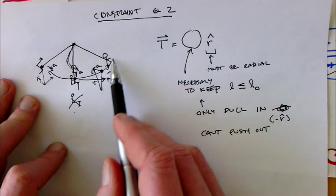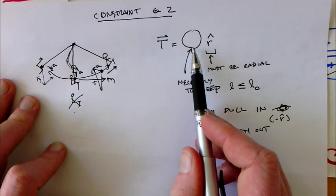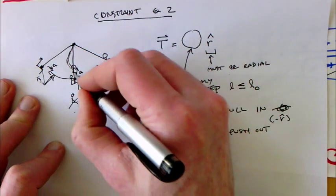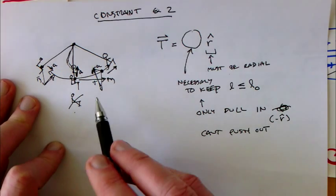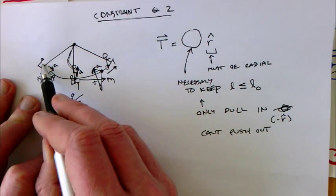You can see that as the person moves, the tension is going to be different, and it's always going to be radially inward. It's radially inward here, here, and here, but the size of it depends on where you are. It'll be largest here and smallest here.